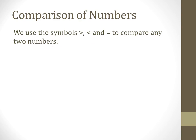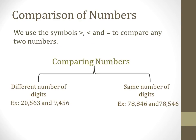For comparing numbers, we will come across two cases. In the first case, all numbers have different number of digits. And in the other case, all numbers have the same number of digits. Now looking at the examples of both these cases.